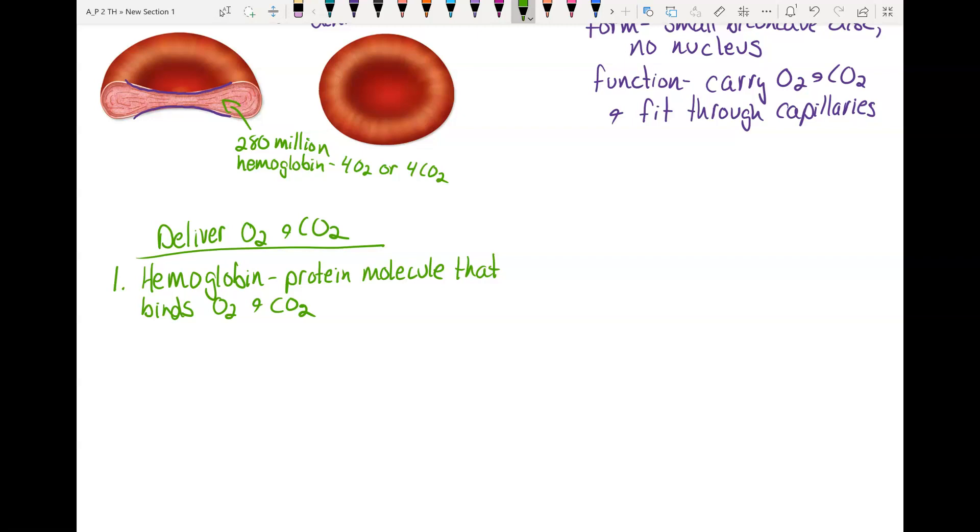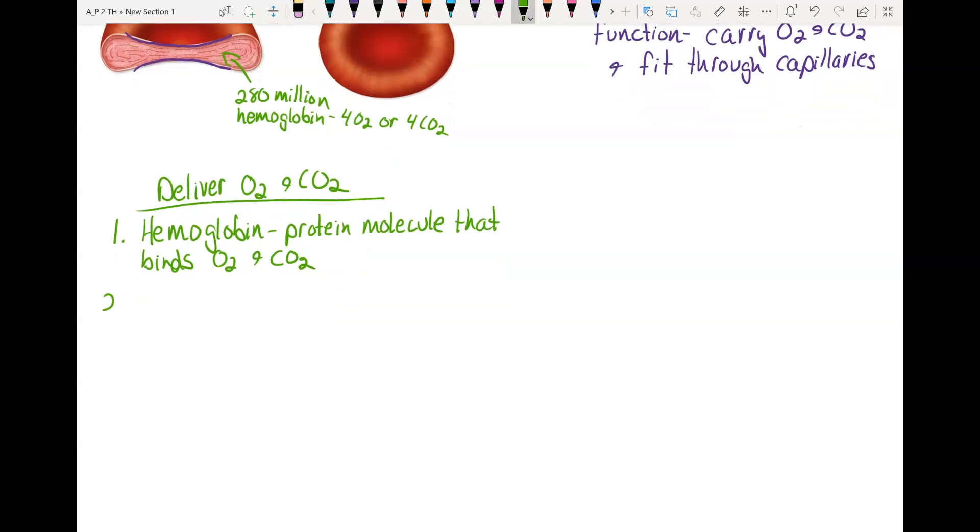The next feature that helps them to deliver these is the fact that they don't have a nucleus. So anucleate means no nucleus. The nucleus is typically the largest structure in a cell. So the nucleus takes up a lot of room.